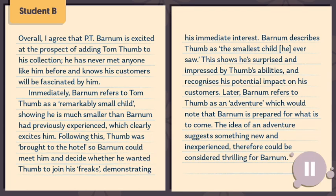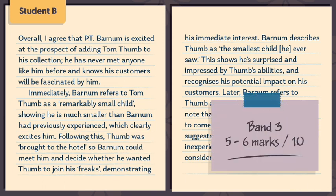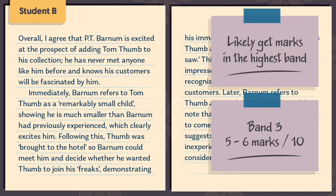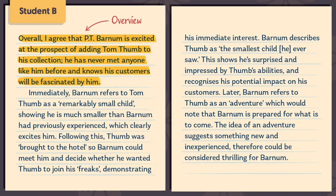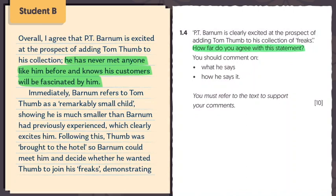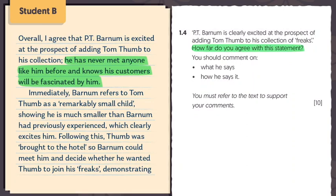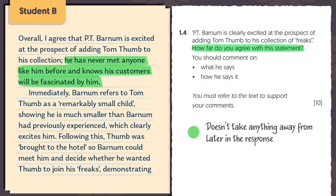Press pause now to give yourself time to read through this part of Student B's response, and press play again when you're ready. Quite clearly we can see this student has produced a very good response, reaching the top of band 3. Remember though, this is just part of their response — if they continued in this way and made 3 or 4 more points, they'd likely get marks in the highest band of the mark scheme. They open with an overview addressing the first part of the question: Barnum is clearly excited at the prospect of adding Tom Thumb. They also address 'How far do you agree?' by explaining why they agree with the statement, providing an overview of the main reason they agree.